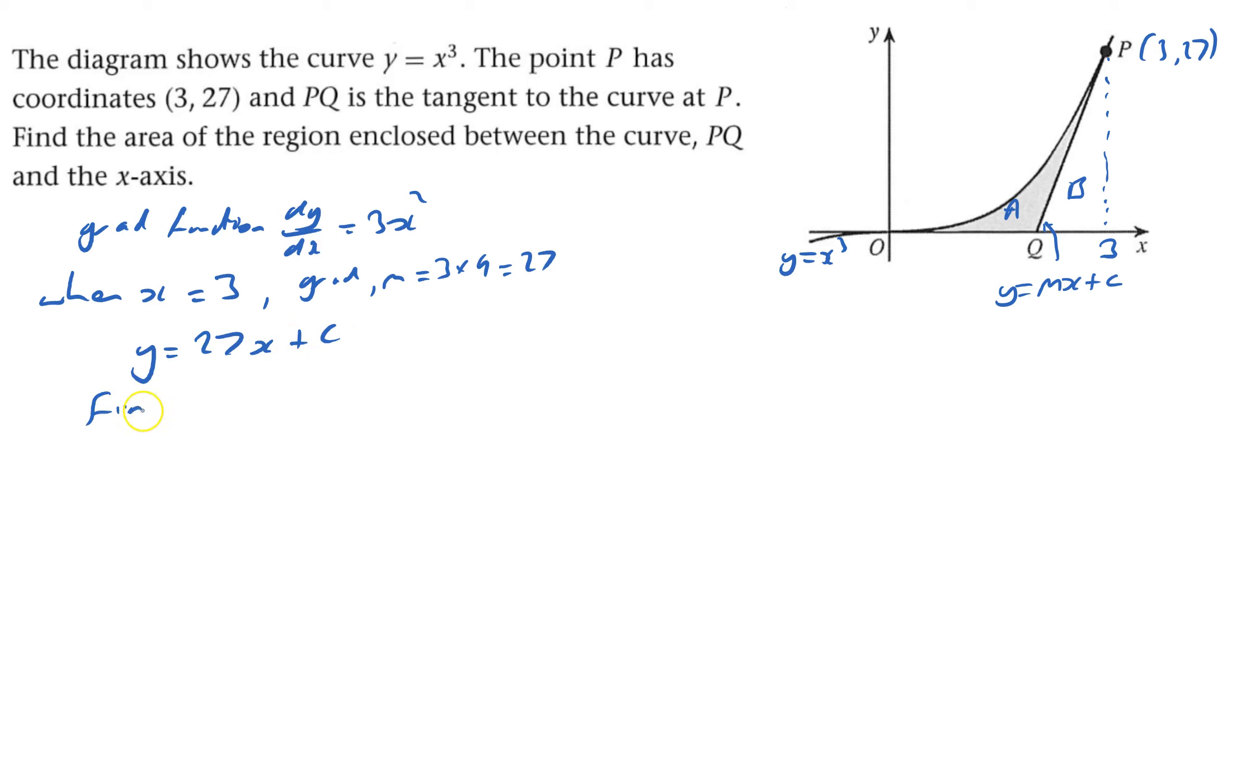I need to find c by subbing any point on that line, and we know it goes through the point (3, 27). As always, that's the first x, that one, that's y. So, y...